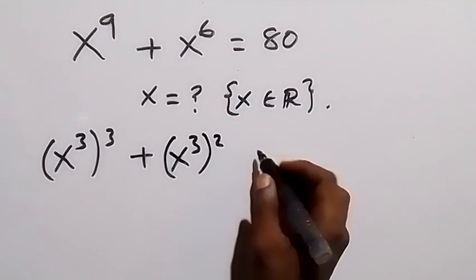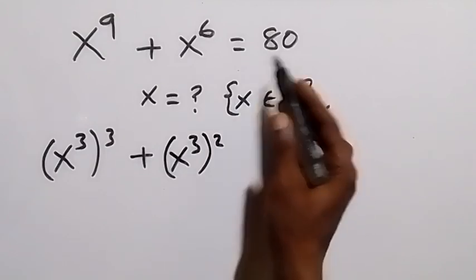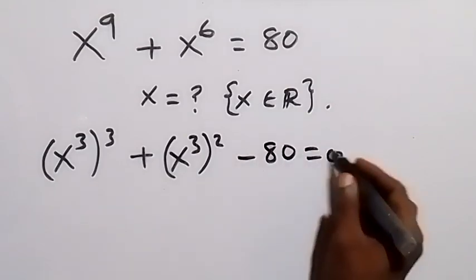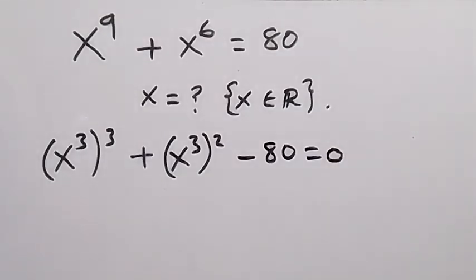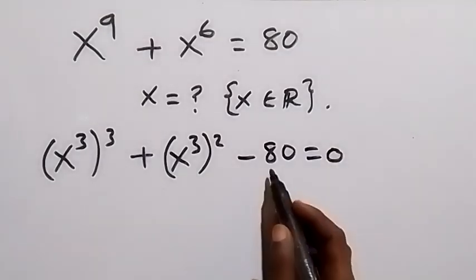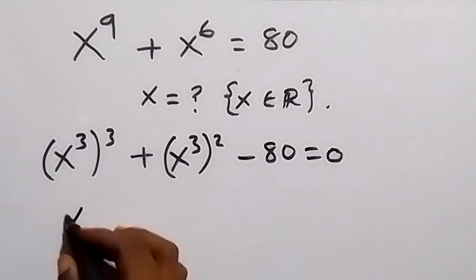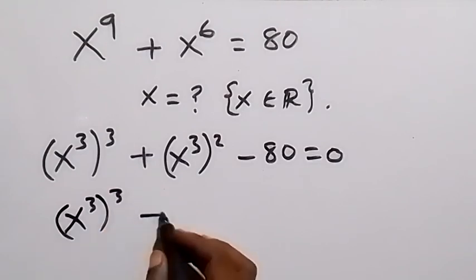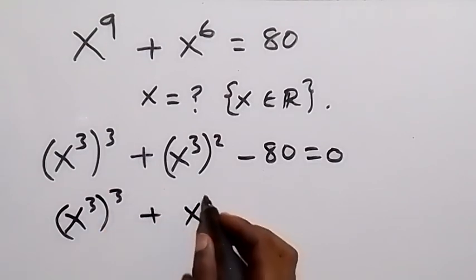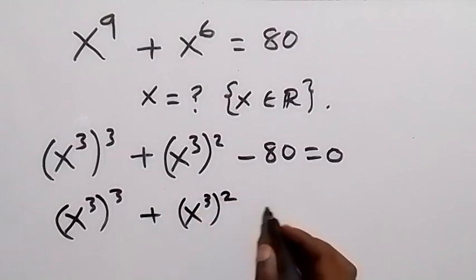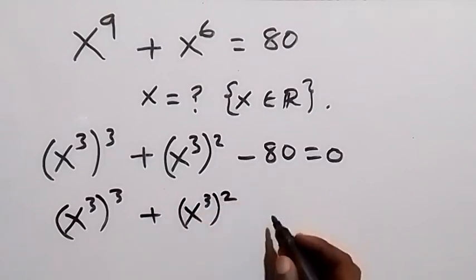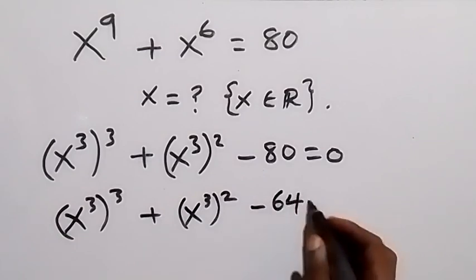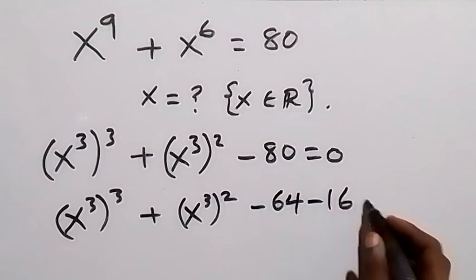Then let's take 80 to the left side, so we have minus 80 here, and the whole expression equals zero. So we have x raised to power 3 raised to power 3, plus x raised to power 3 raised to power 2, minus 80, equals zero.